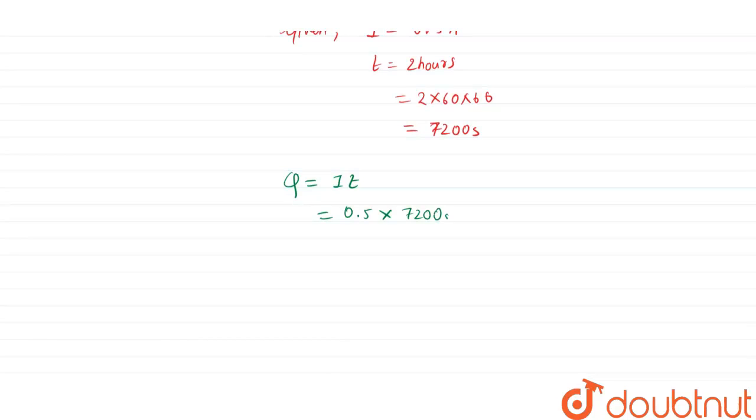This comes out to be 3600 coulomb. So we know that 96500 coulomb has 6.022 times 10 to the power 23 number of electrons.